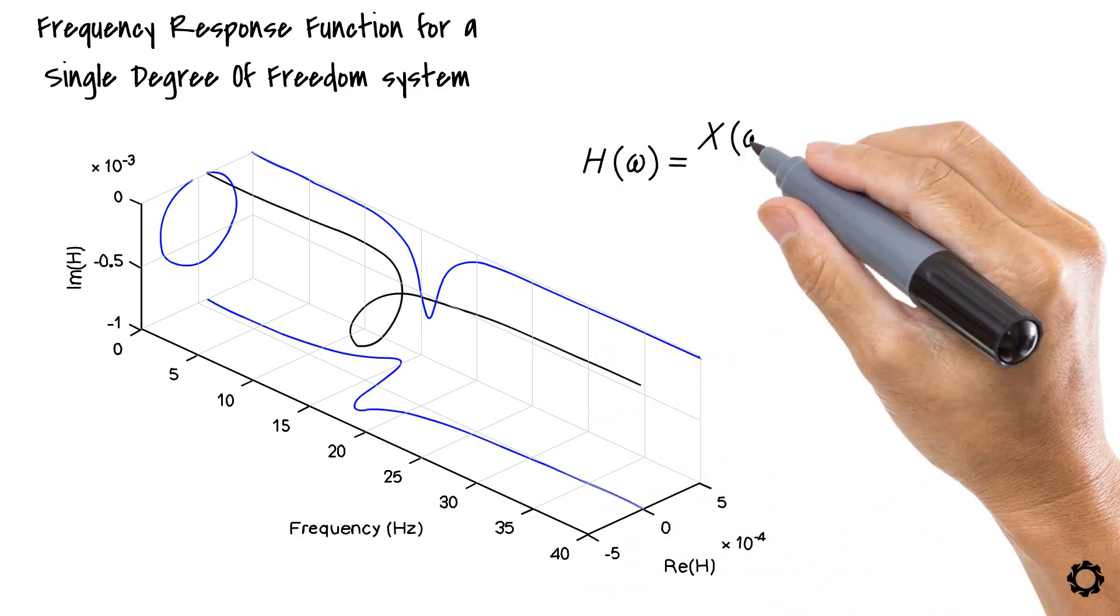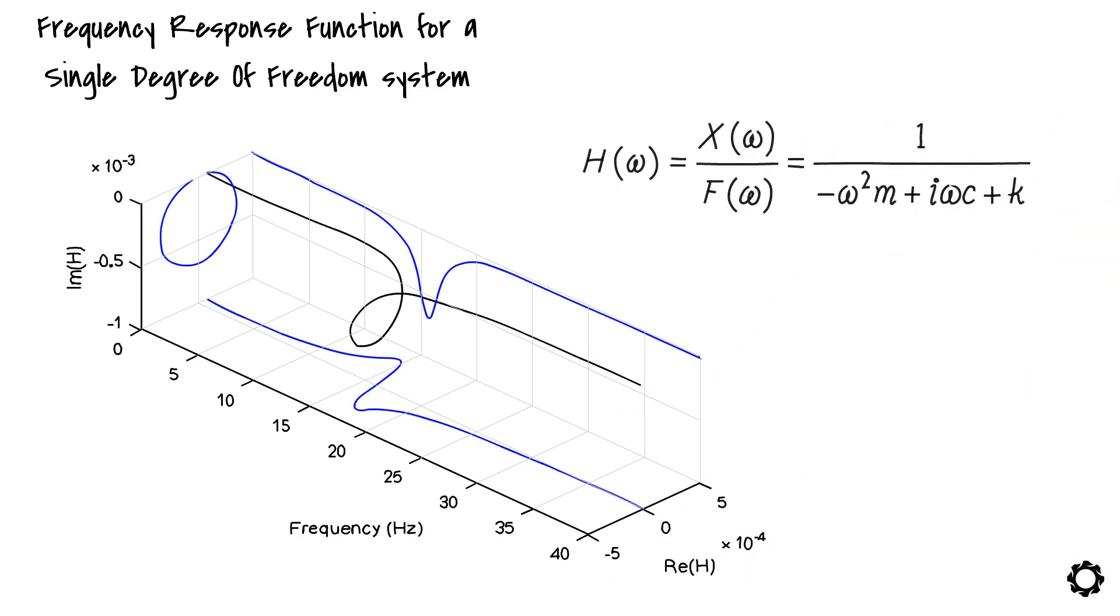On one hand we have the theoretical equation for a frequency response function having an unknown parameter c and on the other hand we have a curve for the frequency response function from the experimental setup which has some damping. If only we had some tools to find c from the curve. Guess what? We do.